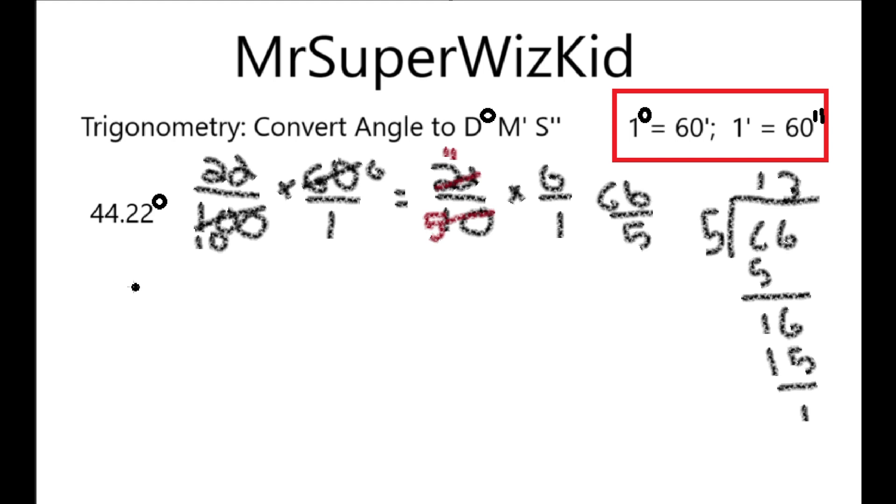And we're going to leave it right there. So, at this point, we have 44.22 degrees is equal to 44 degrees, 13 minutes and then 0.2 of a minute. So, we're going to handle that 5. So, 44 degrees, 13 minutes, and then 1 fifth. 13 and 1 fifth of a minute. So, now, we're going to handle that 1 fifth, that 1 fifth of a minute, we're going to convert that into seconds.